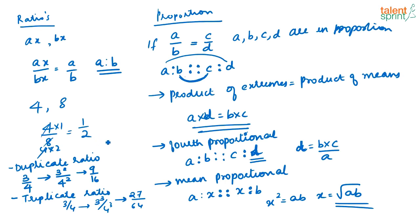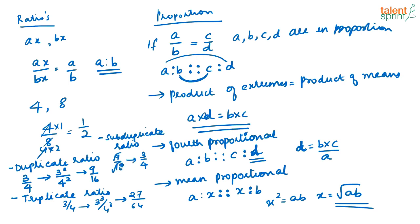The sub-duplicate ratio is the square root of the given ratio. For example, the sub-duplicate ratio of 9 by 16 is 3 by 4. Keep these definitions in mind because questions may ask what is the fourth proportional, mean proportional, or duplicate ratio of given numbers. If you know these definitions, solving such questions becomes very easy.